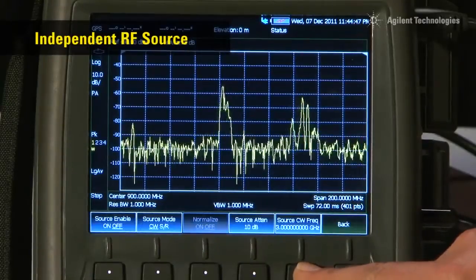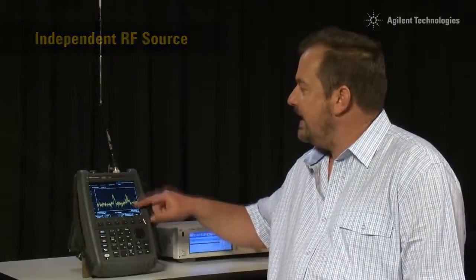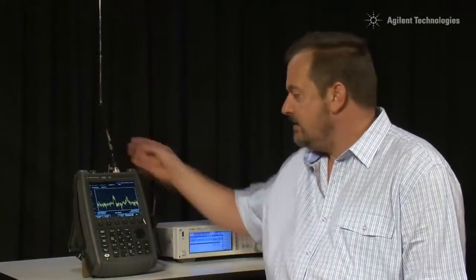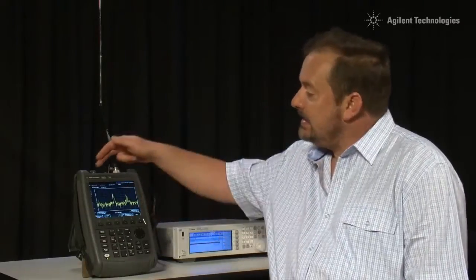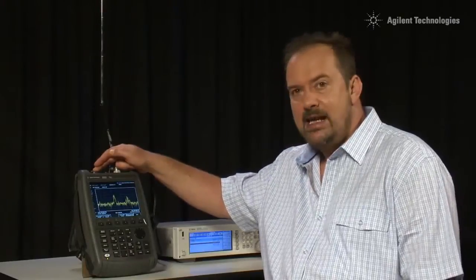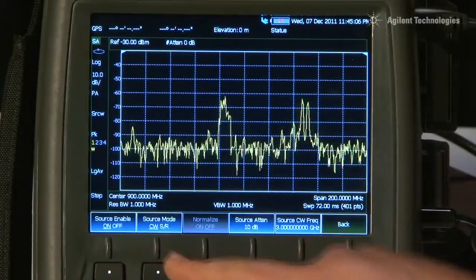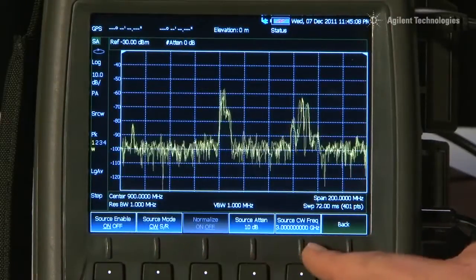One unique feature of the FieldFox is its independent source. Even though we are currently using the spectrum analyzer as a normal spec-an, with in this case an antenna monitoring some frequencies coming off air, the signal generator within the FieldFox can be used totally independently. In this case we have it turned on, it is being used as a CW source, and the frequency can be set completely independently.